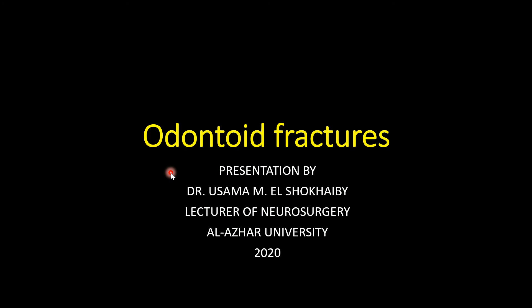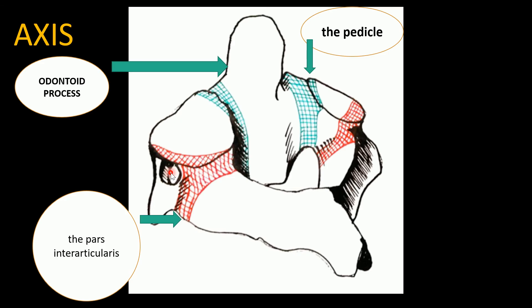Regarding odontoid fractures, the second cervical vertebra — the axis — has its odontoid process as a main component, along with the pedicle in its unique position and direction, and the pars interarticularis, both of which were discussed in Hangman's fracture.